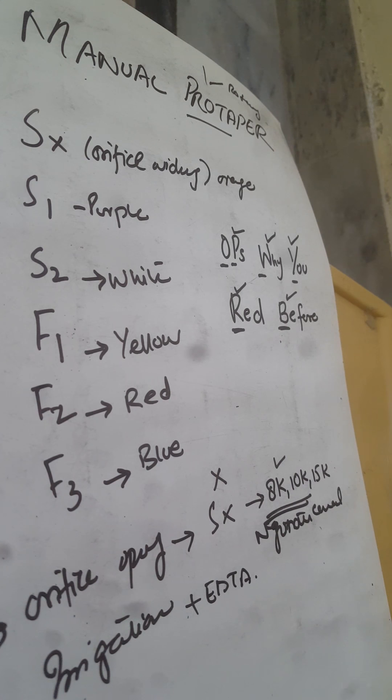Remember one thing: in protaper we have to develop the glide path. That is by continuously using the EDTA and irrigation system so that roots or the canals do not clog with the impurities.